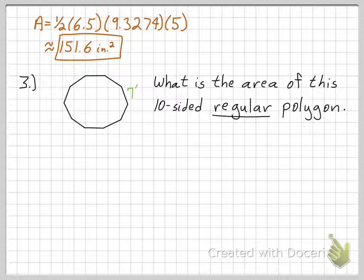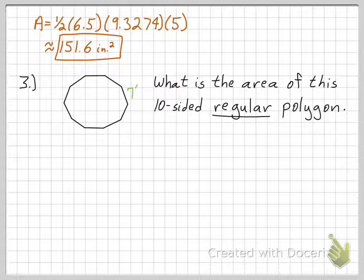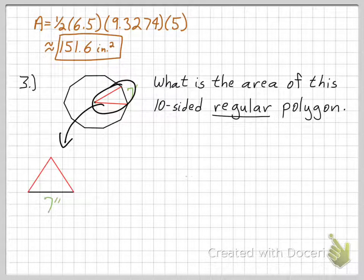The last problem: what is the area of this 10-sided regular polygon? The apothem is not given. Whenever only the side length is given, you need to create a triangle and drop an apothem. I'll take this triangle and blow it up to make it easier to work with. There are 10 triangles within this figure because it's a 10-sided figure. I'll take just half of this triangle to work with.